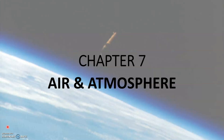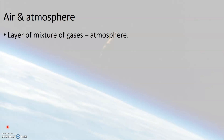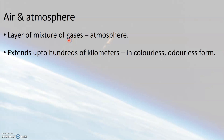You have already learnt in your classics that the surface of the earth is surrounded by a layer of mixture of gases. This layer of mixture of gases is known as the atmosphere. This mixture of gases is commonly known as air, and it extends up to hundreds of kilometers from the surface of the earth. Air is present in a colorless and odorless form of matter.